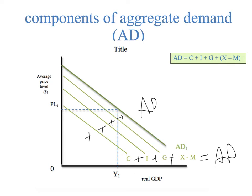If you see C plus I plus G plus X minus M as a collection of smaller demand components, and you added them together, you would get aggregate demand, represented by that line. This is helpful because if consumer spending goes down, that's going to pull aggregate demand in. If government spending goes down, that's going to affect where this line is. Any one of these components going out or in will have an effect on the overall aggregate demand curve.